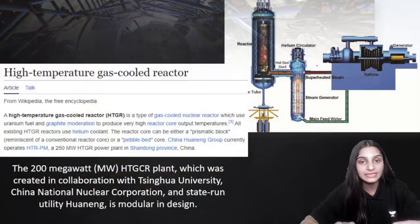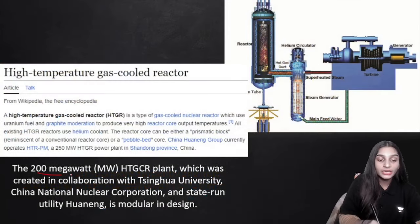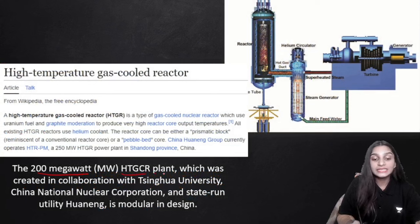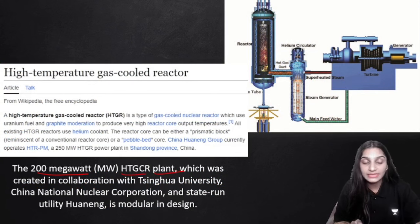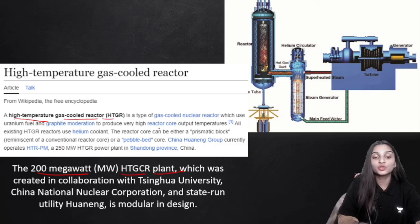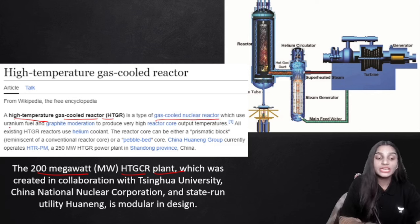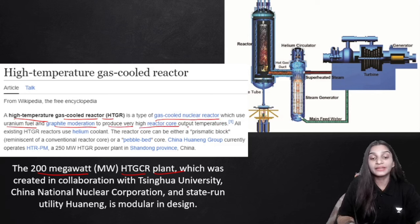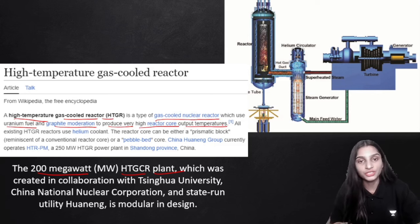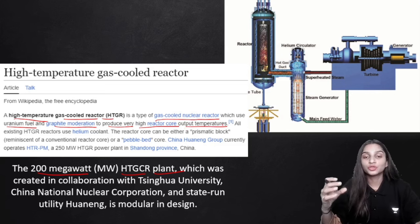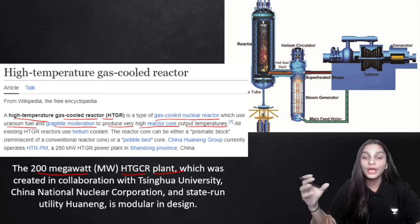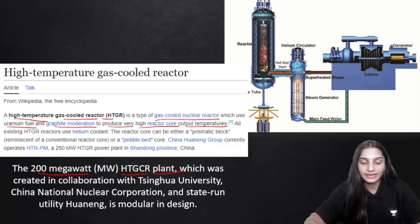In this nuclear reactor, uranium fuel and graphite moderation are used to produce high reactor core output temperatures. These high temperatures are used to produce what is known as an HTGR — a High Temperature Gas-cooled Reactor.